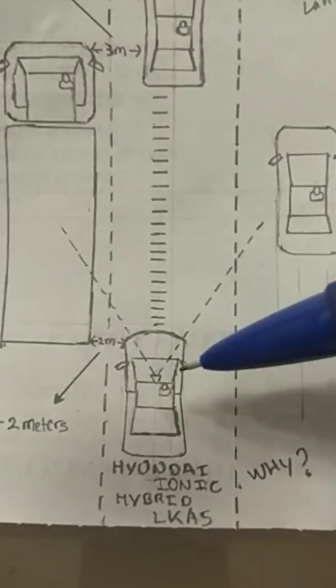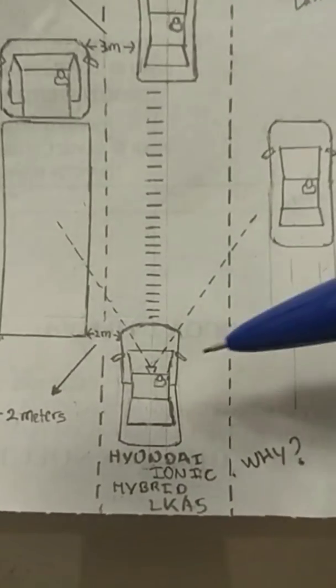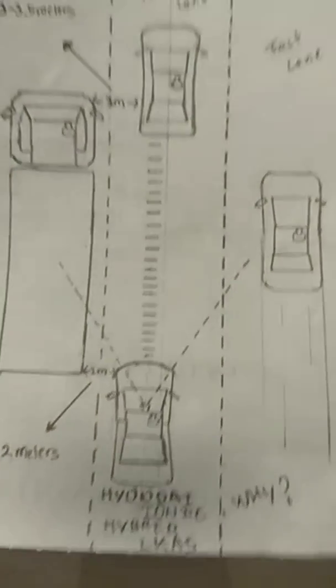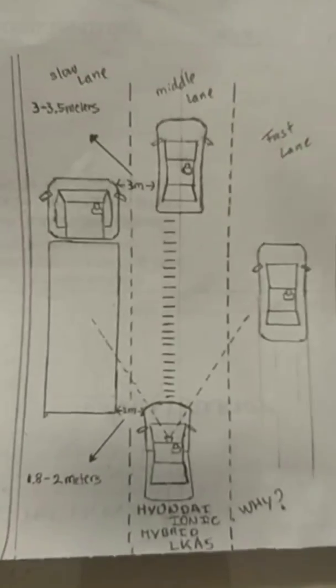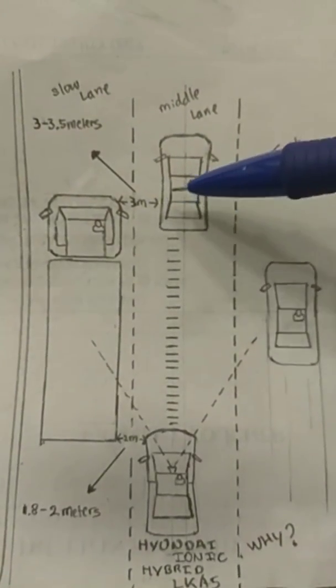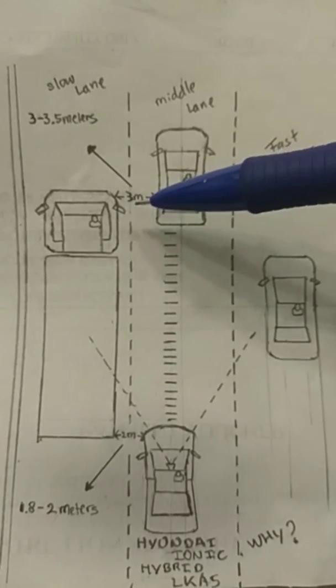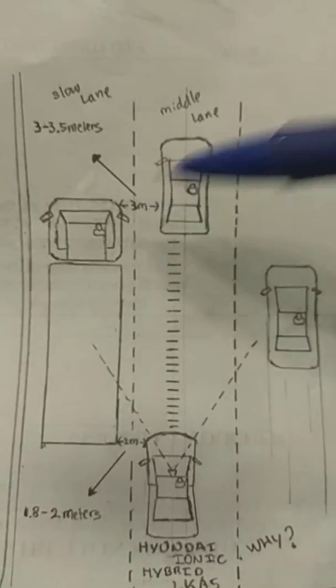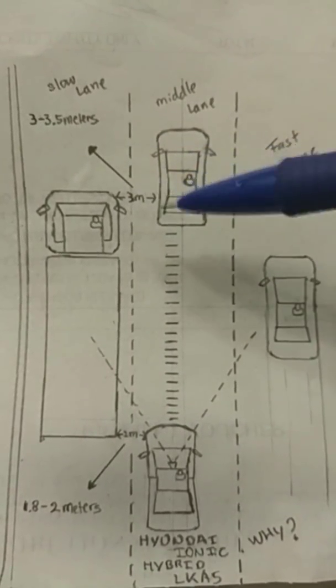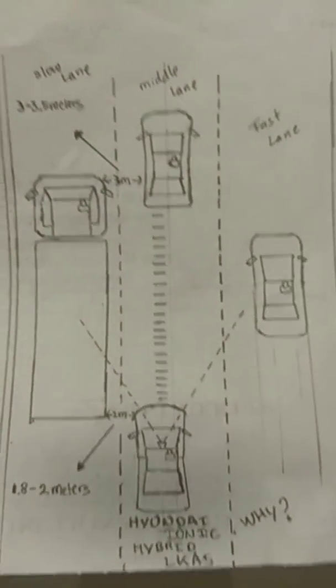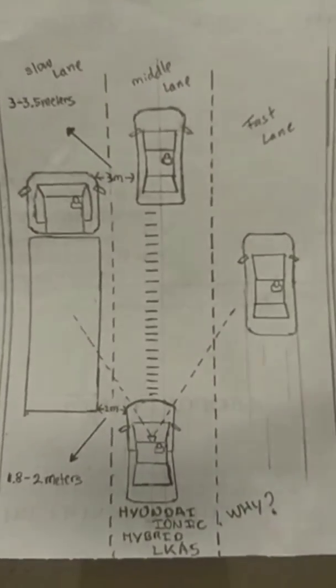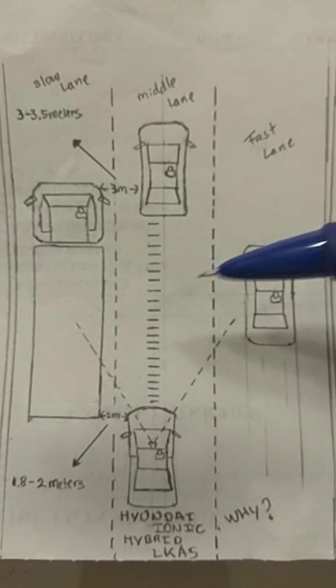So I believe the car doesn't really go to the center, mostly to the left lane. But on the other hand, the other car in front, they have quite a distance away from the truck itself, it's about 3 meters to 3.5 meters away.